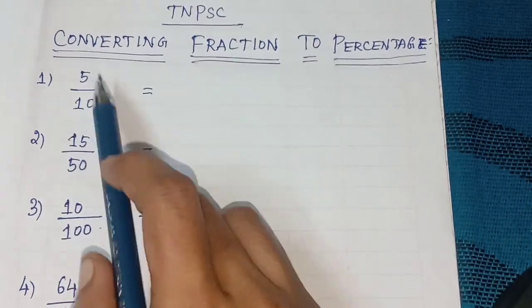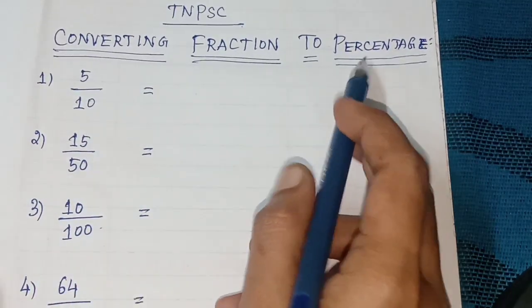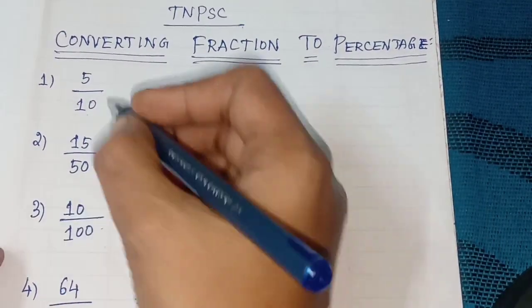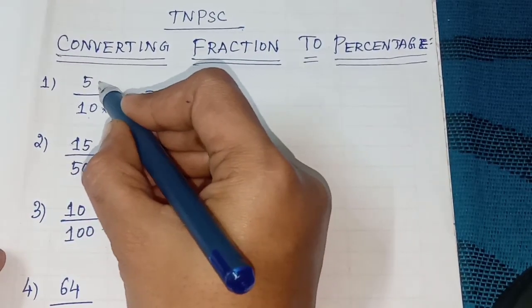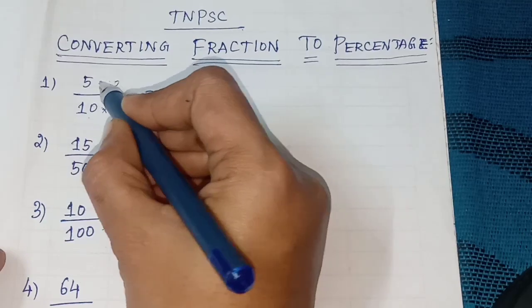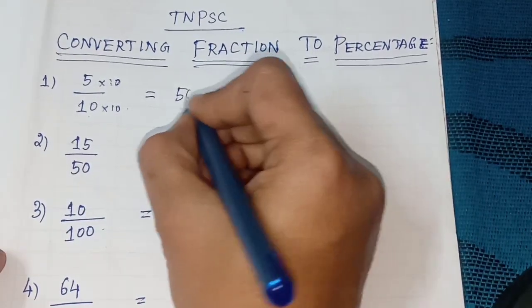So this is fraction. To convert to percentage, we need 100 in the denominator. So multiply by 10. Both numerator and denominator multiply by 50. So 50 percentage.